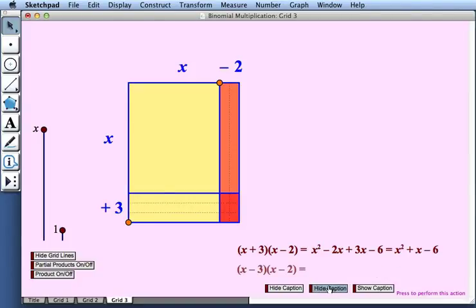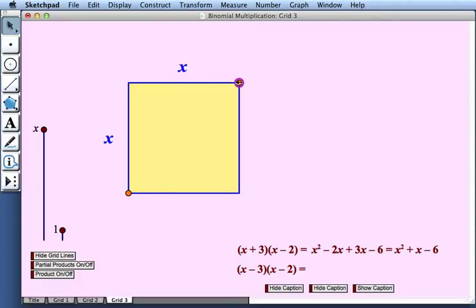Now let's look at what happens when we subtract in both of our multipliers, when we subtract in both of our multipliers x minus 3 and x minus 2. So let's return to where we started with just x by x. So we have an area so far of x squared.